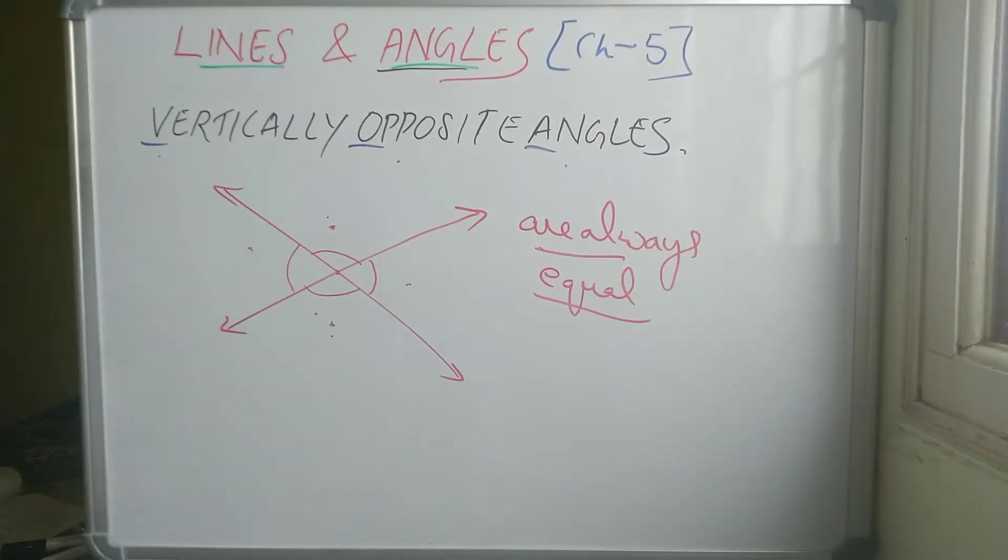So how is this formed? When two lines intersect. Intersecting lines. That means at one point they will intersect and angles are formed. And what about opposite angles? These two are not equal. These are adjacent angles. But opposite angles are equal. Vertically opposite angles are equal.